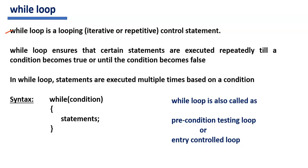What is the difference between conditional control statements and looping statements? In conditional control statements, the statements are executed only once — only for one time when the condition becomes true. But in looping statements, the statements are executed repeatedly a number of times based on the given condition.